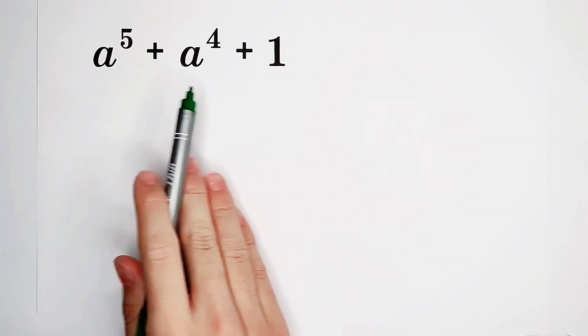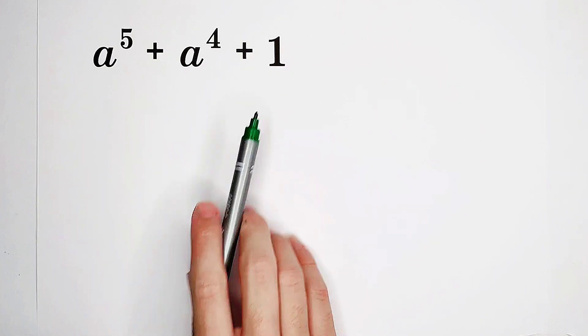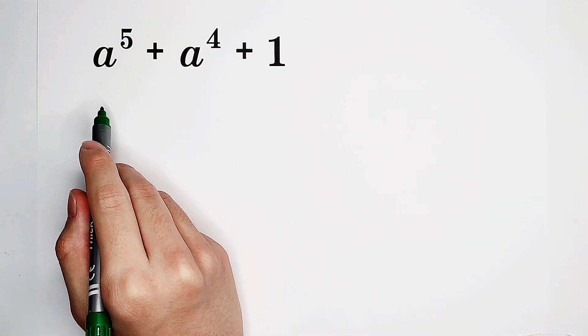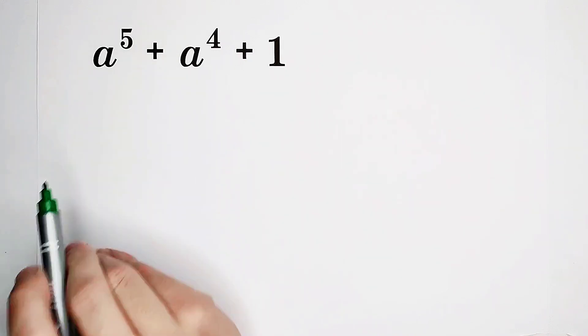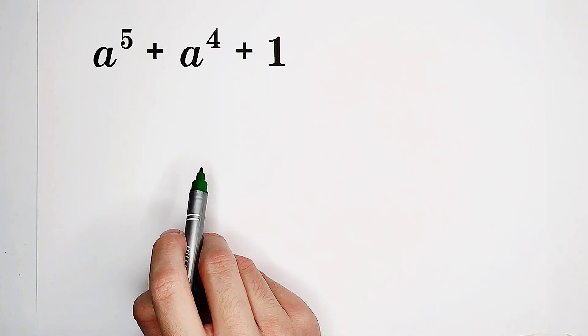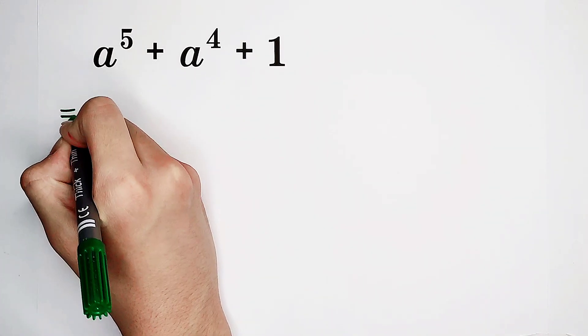Factorize a to the power of 5 plus a to the power of 4 plus 1. How should I do it? You see, there's nothing we can do. But if we want to factorize this one, I have a good trick. It is not easy to see.